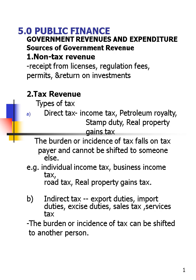The source of government revenue: the first is non-tax revenue — anything received from licenses, regulation fees, permits, and returns on investment. That is one of the government revenues. The second one is the more famous one — I think everyone knows this — it's the types of tax.